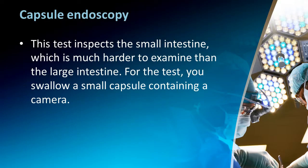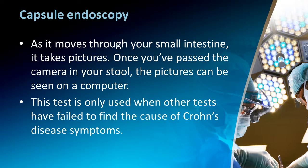Capsule endoscopy inspects the small intestine, which is much harder to examine than the large intestine. For this test, you swallow a small capsule containing a camera. As it moves through your small intestine, it takes pictures; once you've passed the capsule, the pictures can be viewed on a computer. This test is only used when other tests have failed to find the cause of Crohn's disease symptoms.